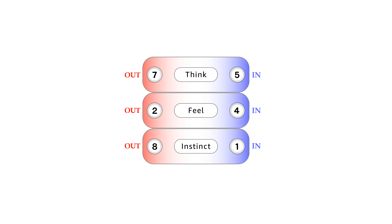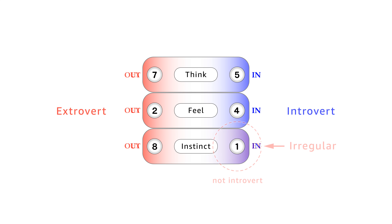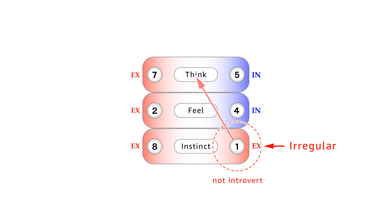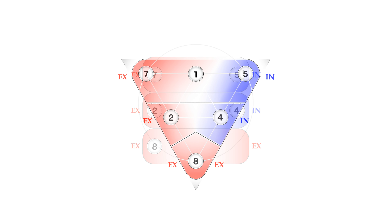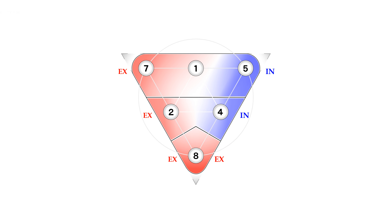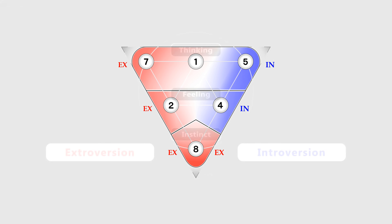The out and the in of the three centers are related to extroversion and introversion. But point one is changed into extroversion. Also, it goes up from the instinctive center to the thinking center. The reason was discussed in Chapter 1, Section 1.